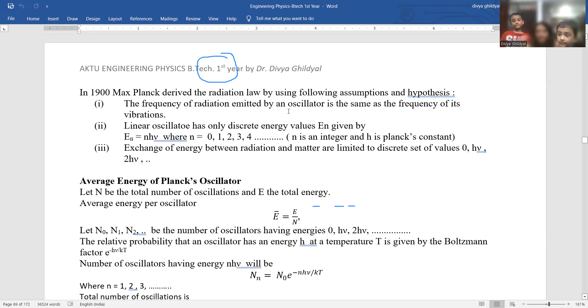The frequency of radiation emitted by an oscillator is the same as frequency of its vibration. Linear oscillator will have only discrete energy values: E_n discrete means n = 1, 2, 3, 4. E_n = nhν, where n = 1, 2, 3, 4. This comes from Einstein equation. Now, average energy of Planck's oscillator: let N be total number of oscillations and E the total energy.